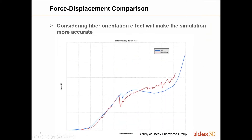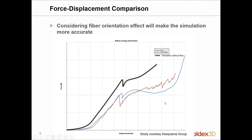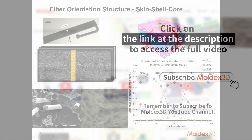Based on this case study, you can see the red curve is the simulation result and the blue curve is the testing result. If we don't consider fiber orientation — shown as the thick black line — you can see the results are very different compared to the testing results. That's why fiber orientation plays a very important role in FEA packages.